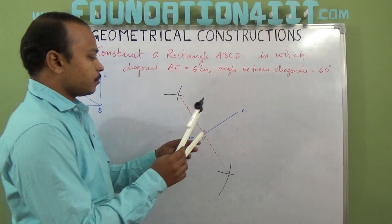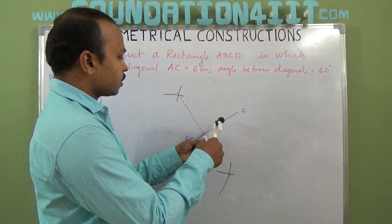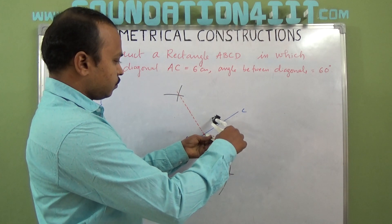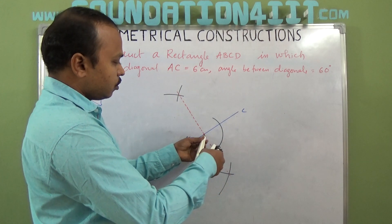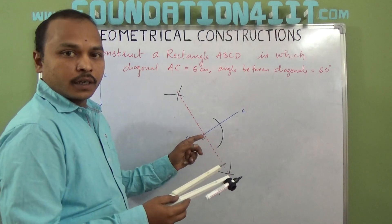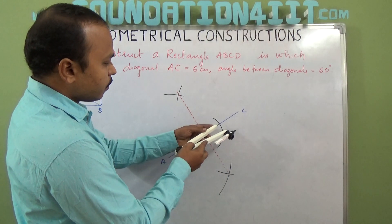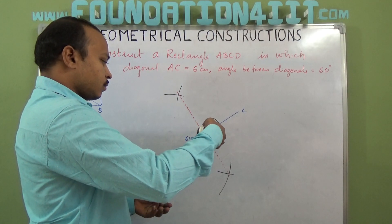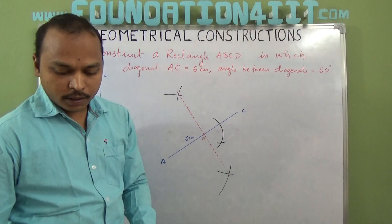Construct the 60 degree angle. Draw an arc from center and same radius from here, you can cut this. Just extend this.